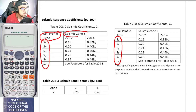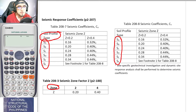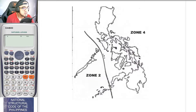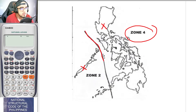For seismic zone, the tables have two columns: 0.2 and 0.4. Seismic zone 2 corresponds to Z = 0.2, and seismic zone 4 corresponds to Z = 0.4. The NSCP includes a seismic zone map of the Philippines. For example, most of Luzon falls in zone 4, while Palawan is in zone 2. The Philippines has only two zones — zone 4 and zone 2 — divided by a boundary line.